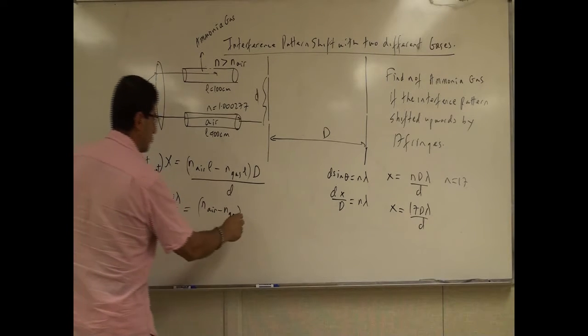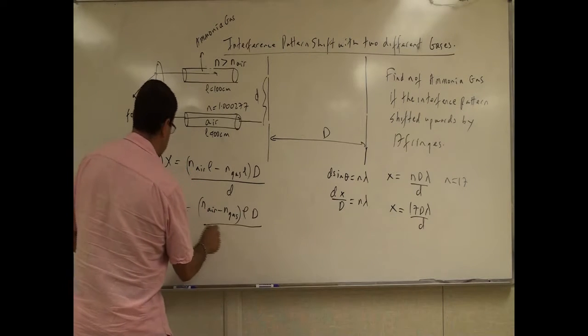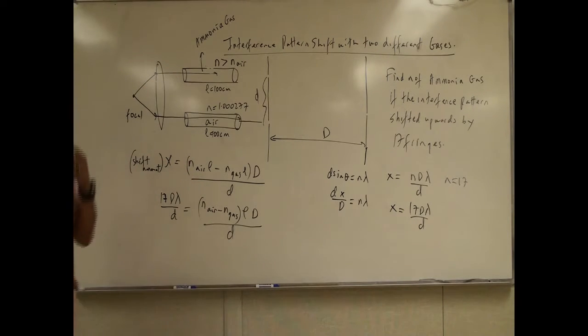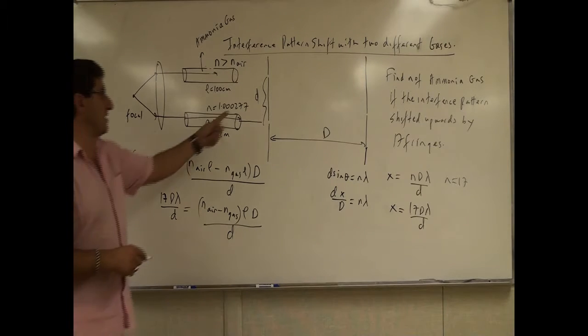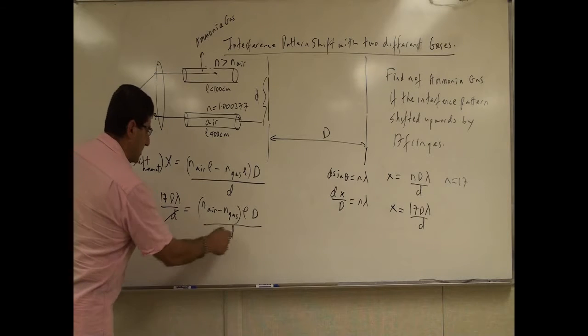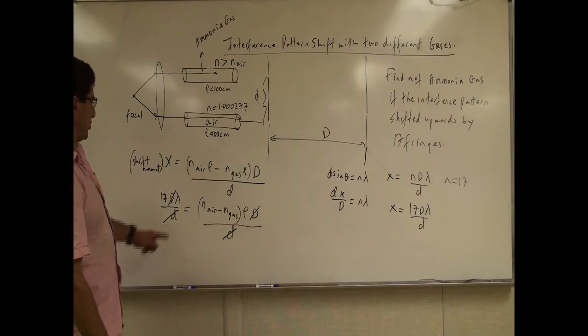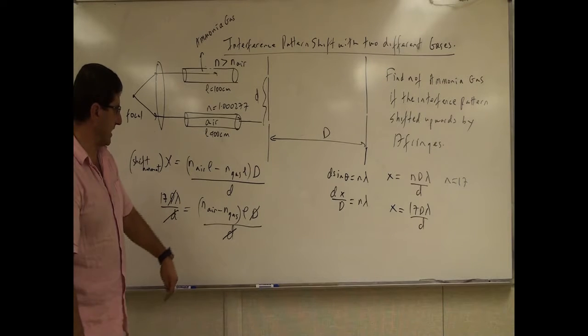Now we can factor out the L. Times D over big D. So what does that mean? That means the problem doesn't have to tell us the distance between the slits and the distance to the screen. This D and this big D cancel. So therefore we can solve for the N of the gas.